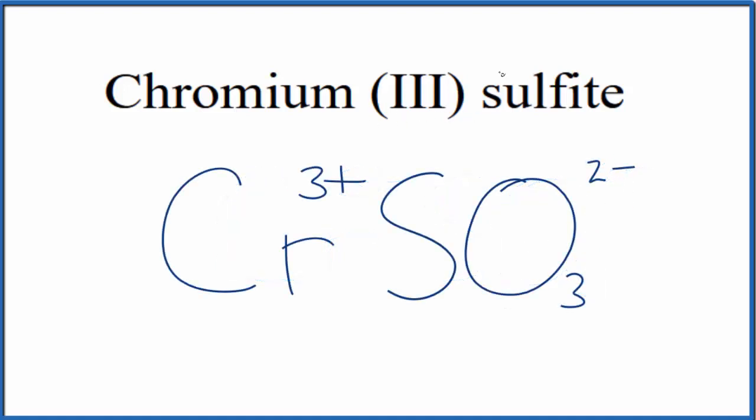So since chromium (III) sulfite is neutral, it doesn't say ion after it. These charges here, they need to add up to zero. We need to have a net charge of zero.